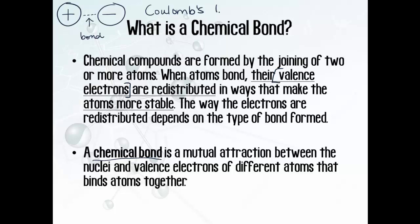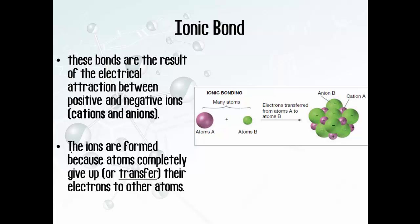You may or may not need to know it by that name, but the main idea is that opposites attract. So the nucleus of one atom is positive, the valence electrons on another atom are negative, and they're attracted to each other because they're opposite in charge. The first type we're going to talk about is an ionic bond. These bonds are the result of an electrical attraction between positive ions and negative ions — that electrical attraction is a result of Coulomb's Law.